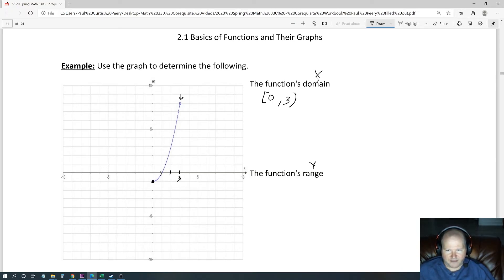Now we're looking at range. Range are the y values. The smallest y value looks like it's right there, a negative one. Now in this case, it is solid, so we include the negative one by using the bracket.